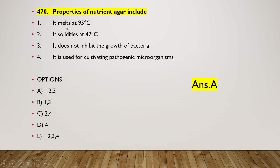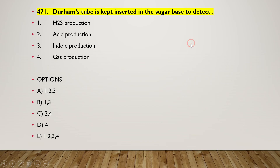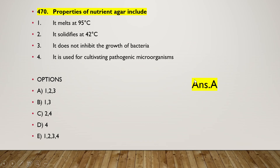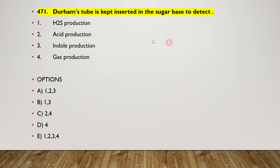The next question: properties of nutrient agar include — it melts at 95°C, it solidifies at 42°C, it does not inhibit the growth of bacteria, or it is used for cultivation of pathogenic microorganisms. The right answer is option A — one, two, and three are correct.